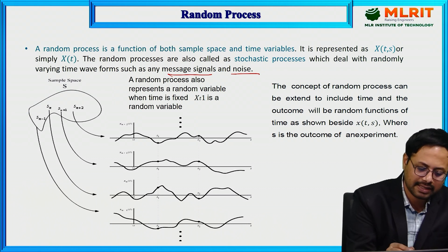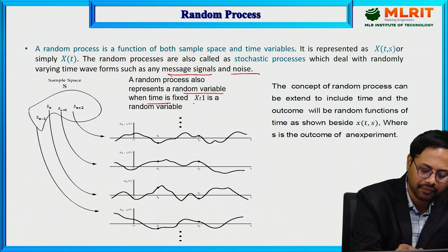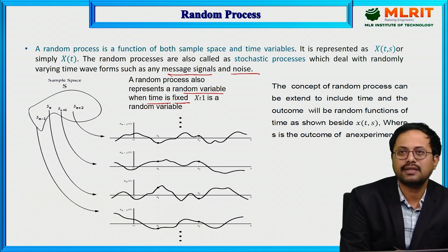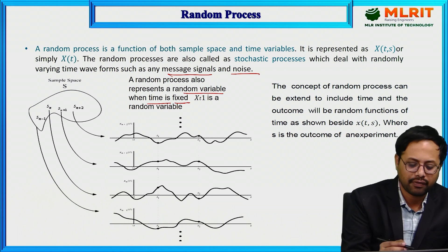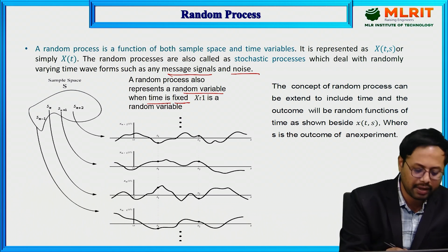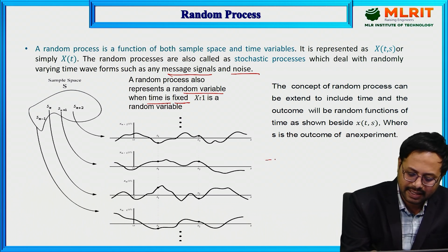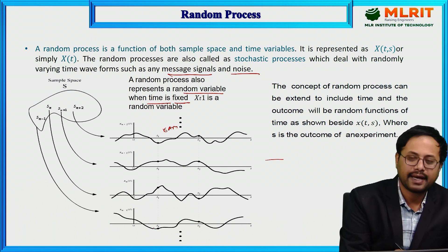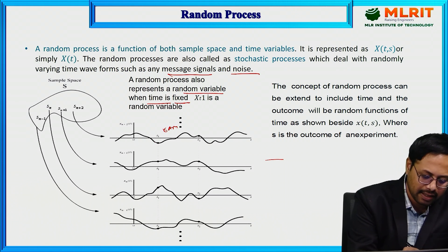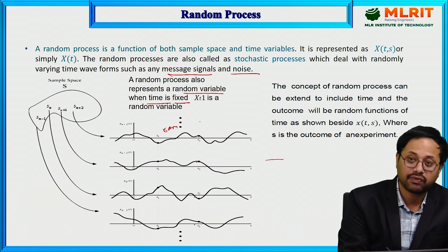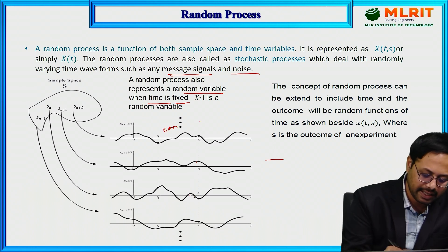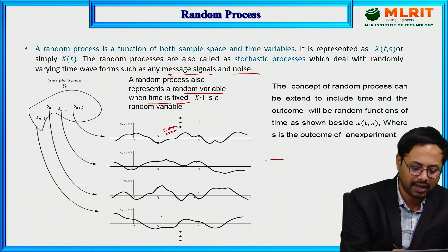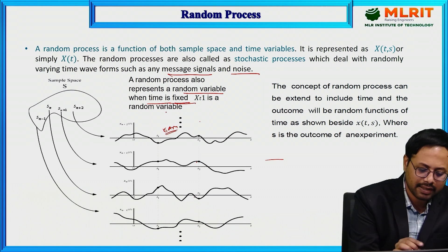A random process also represents a random variable when time is fixed. For example, consider the temperature over four days. If you are measuring temperature each day at a fixed time, say morning 8 o'clock, at that fixed time you get some values — one for today, one for tomorrow, one for the day after tomorrow, and one for the next day. Each day at morning 8 o'clock, whatever value you calculate at that instant is called a random variable. For fixed time, that is called a random variable.